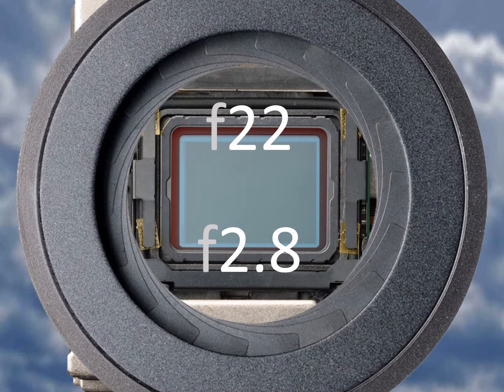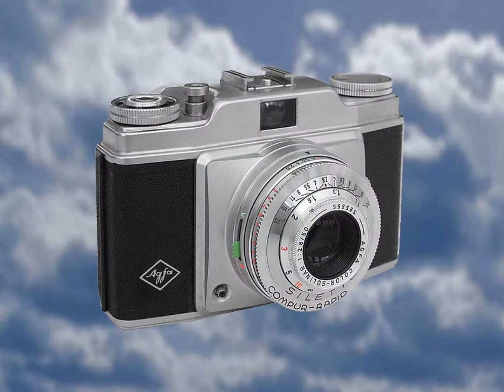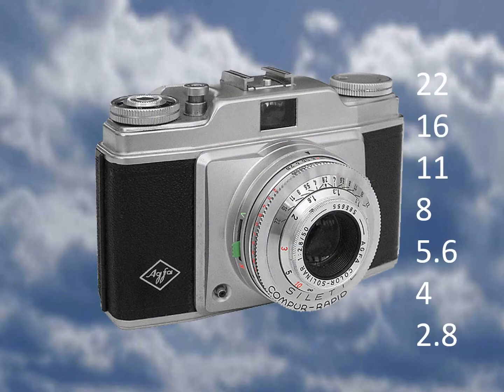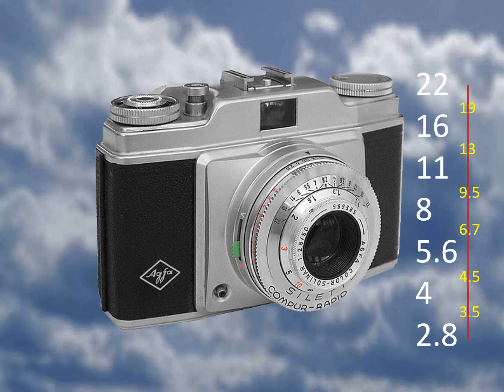Turning back the clock again, here are the basic values engraved on the lens barrel of my Agfa Select camera, as shown in Photosoundbyte 2. As with shutter speeds, computerised cameras show additional values, which for the sake of simplicity I am ignoring.